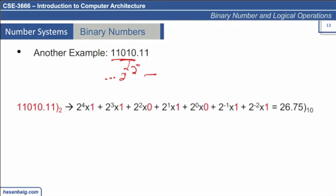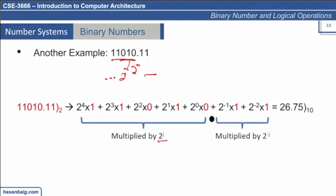Here is an example. You can see the decimal point here. We multiply by 2 to the power of j on the left side, and on the right side we multiply by 2 to the power of minus j — or equivalently divide — giving us 1 over 2, 1 over 4, 1 over 8, and so on. This is how we convert the fractional binary number into a decimal value. This is the decimal equivalent of this binary number.